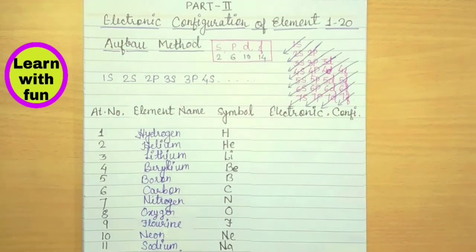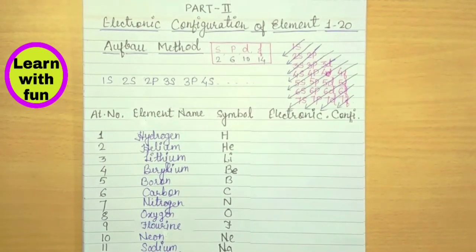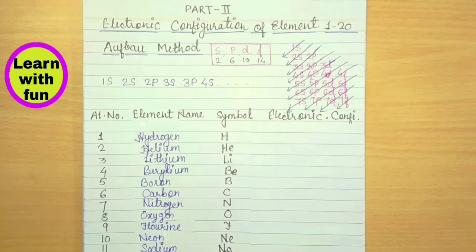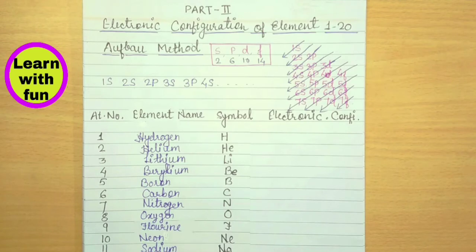Hello everyone, I am back with a new video. In this I am going to show you how you can write electronic configuration of elements 1 to 20. This is Nisha Chauhan and you are watching Learn With Fun.